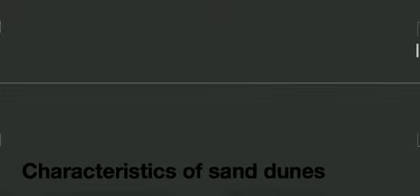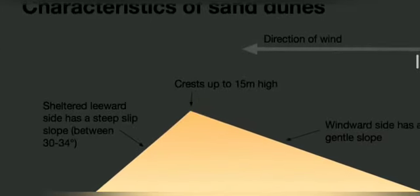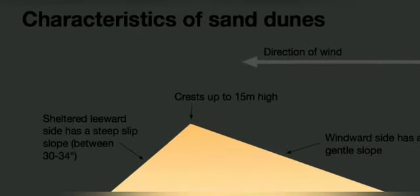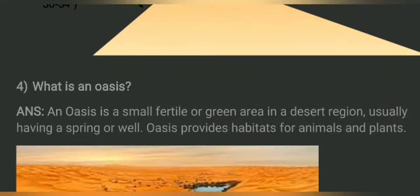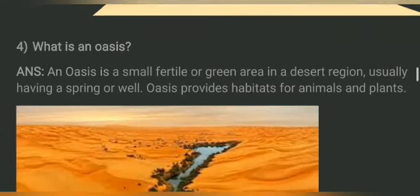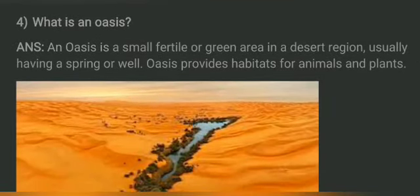As we can see in the picture, the direction of the wind determines dune shape. The crest can be up to 15 meters high, the leeward or sheltered side is a steep slip slope, and the windward side is a gentle slope. The fourth question is: what is an oasis?